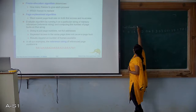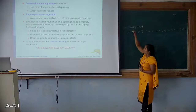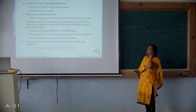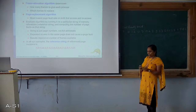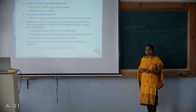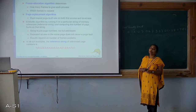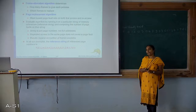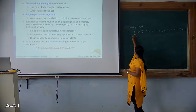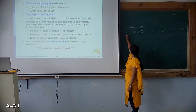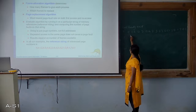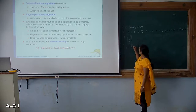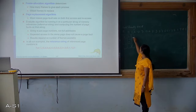Now the LRU — least recently used — algorithm. In this, we look at the past: whichever frames were not used in recent time, we replace that page. So we start with 3 frames. 7 is required — put 7. Then 0 is required — put 0. Then 1 is required — put 1.